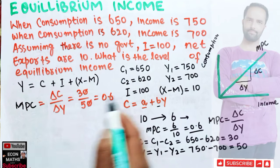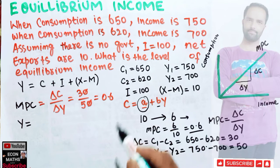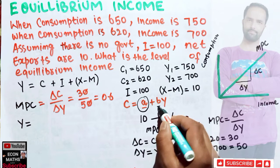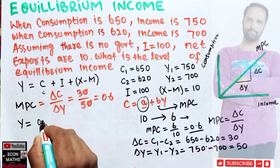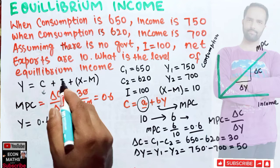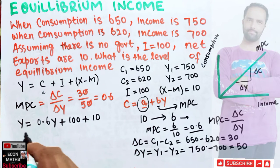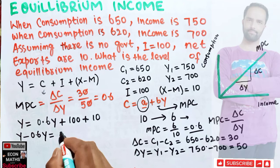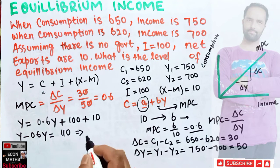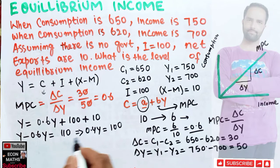Our consumption function becomes C = 0.6Y, since autonomous consumption is not separately given. Substituting into the income identity: Y = 0.6Y + 100 + 10. Transposing, Y minus 0.6Y equals 110, so 0.4Y equals 110, which can be written as (4/10)Y = 110.